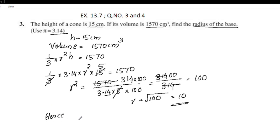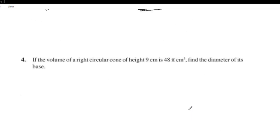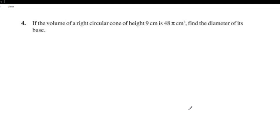The radius of the base is 10 cm. Now for question 4: if the volume of a right circular cone of height 9 cm is 84π cm³, find the diameter of its base.